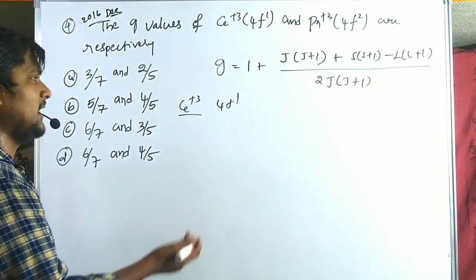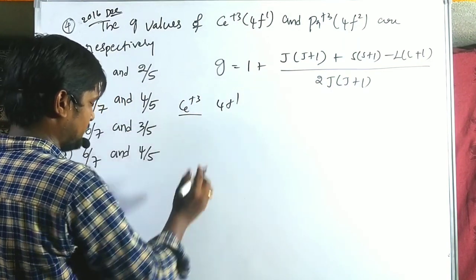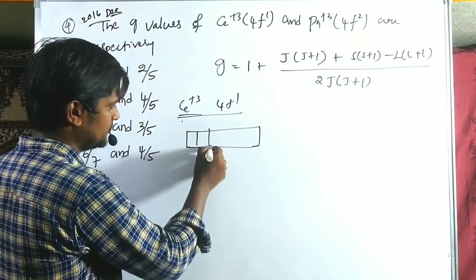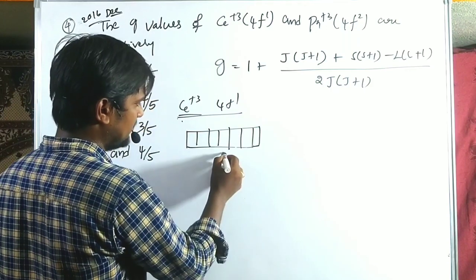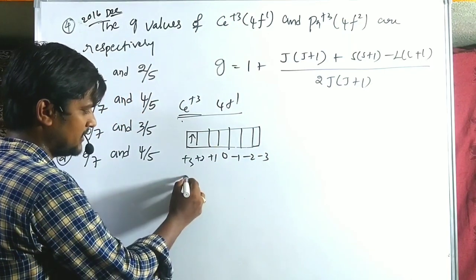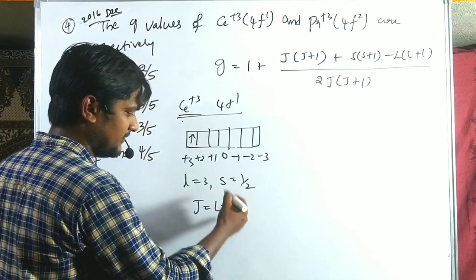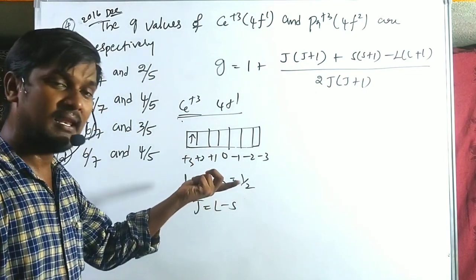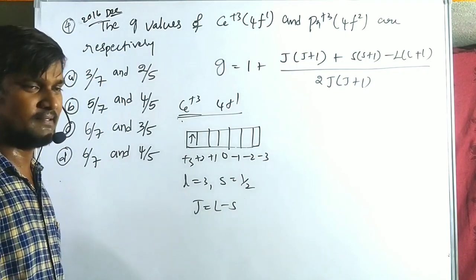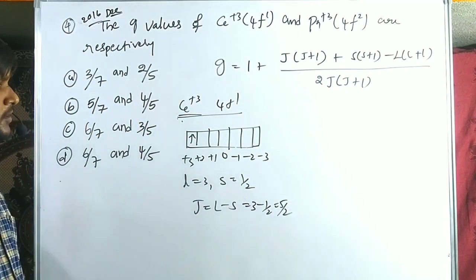Using ground term symbol knowledge: Ce³⁺ is 4f¹. For f orbitals with one electron, L = 3, S = 1/2. Since this is less than half-filled, J = L - S = 3 - 1/2 = 5/2. Now we substitute these values into the g-formula.